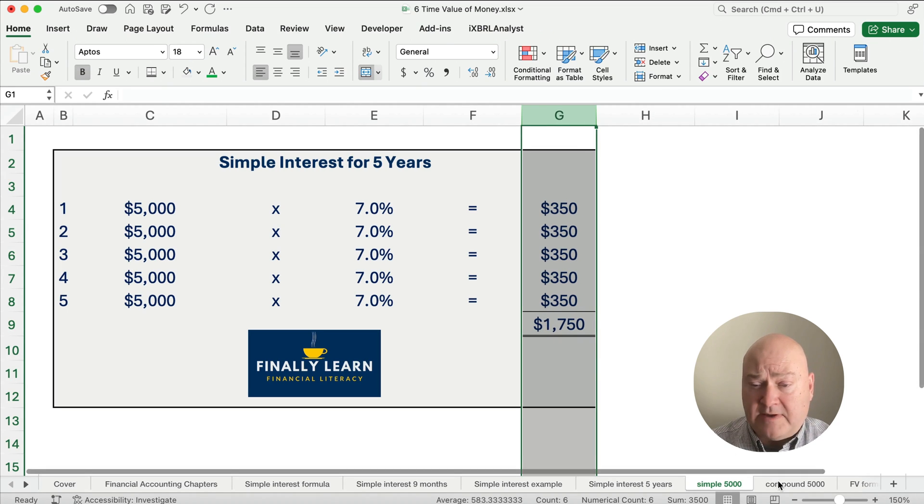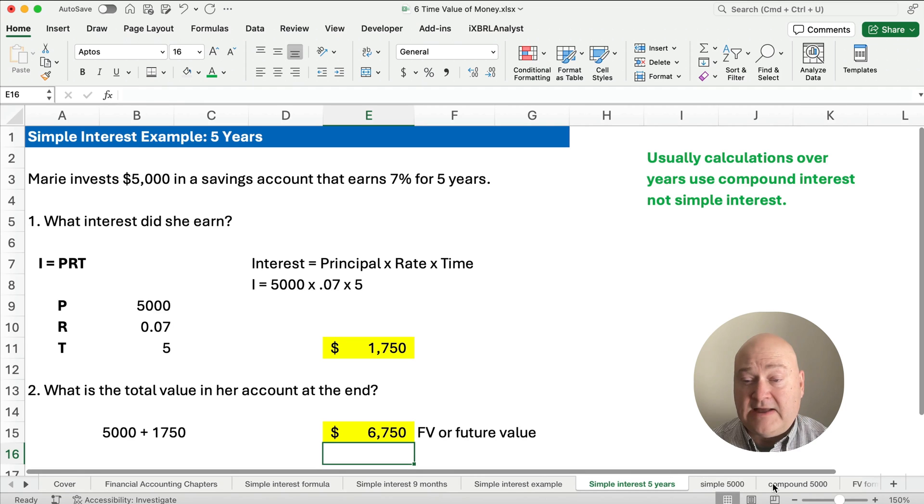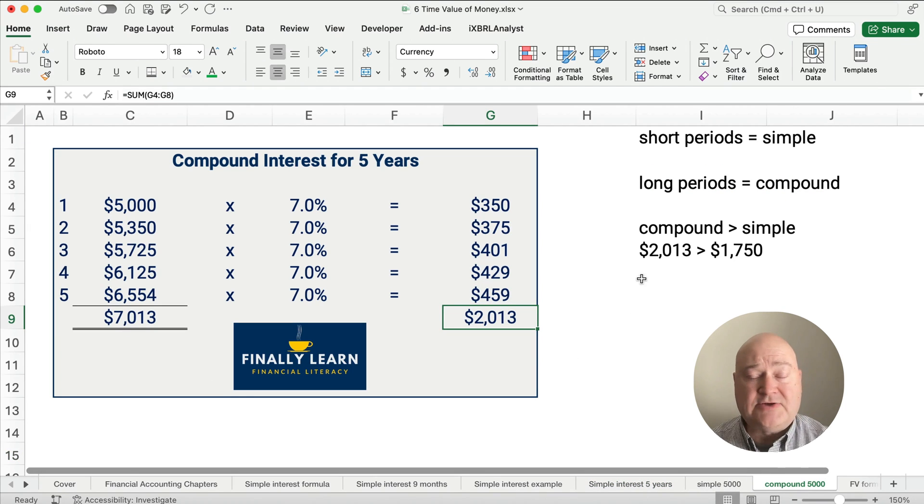Let me show you just real quickly what would happen in compound interest. Compound interest, we have the same rate every year, but when we go 5,000 times 7%, we get $350. We add that to the original $5,000. So compound interest is interest on top of interest. So $5,350 will get a little more interest. Then $5,725, a little more interest. So what's going to happen is instead of growing to $6,750, it's going to grow to $7,013. So for short periods of times, certainly we can use simple interest. For long periods of times, we use compound interest because compound interest is going to provide, at the same rate, a larger amount of interest. In this case, we saw $2,013 rather than $1,750. And over time, the longer the time goes, or the bigger the interest rate, the more that is a difference between compound interest and simple interest.